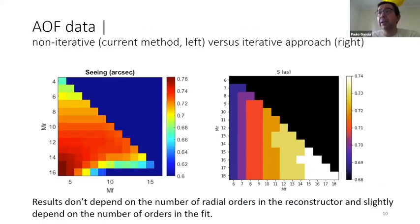So just to show you some data, in the left, you have a seeing estimation, which is the current seeing estimation working in the AOF. You see that the value that you get depends on the number of modes used in the fit and also on the number of modes used in the reconstruction matrix. And here you have our method. You see that our method is not sensitive to the number of modes in the reconstruction matrix, because we have the iterative approach. And also, although there is a variation in the number of radial orders that you're using in the fit, the variation is very small.